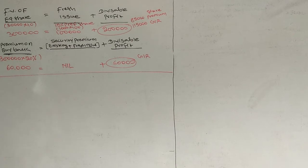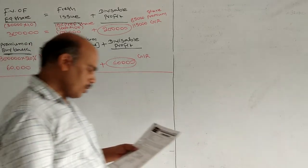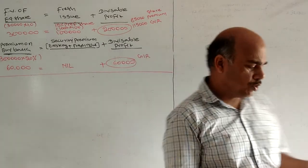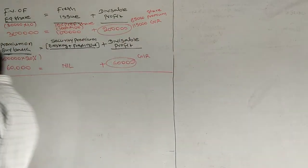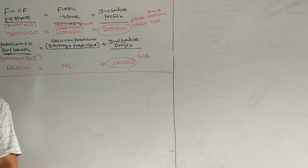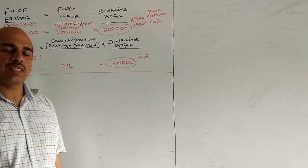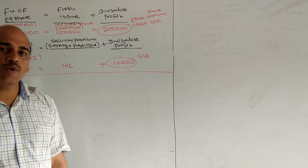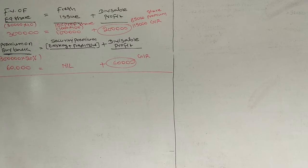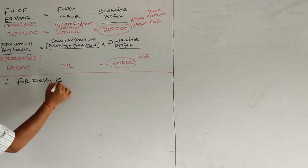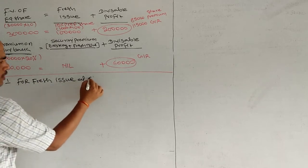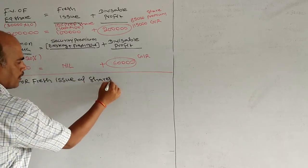Okay, so our chart is drawn: 3 lakhs rupees - 1 lakh fresh issue, 2 lakhs free reserves. Out of 2 lakhs, 85,000 from security premium, 1 lakh 15,000 from general reserves. Premium is 60,000 from security premium. As usual, we will do journal entries.